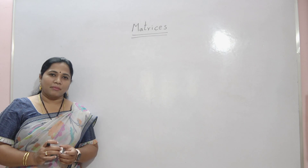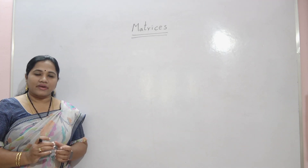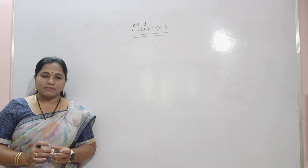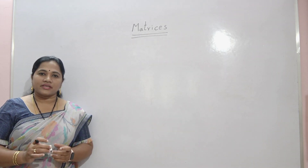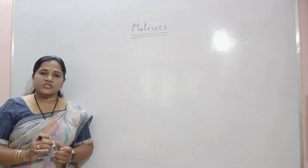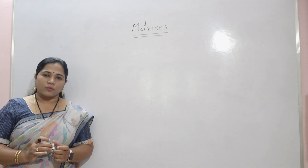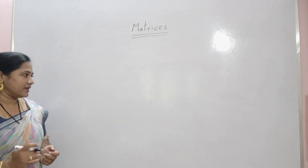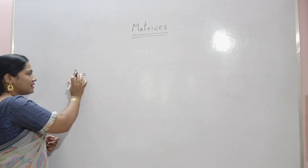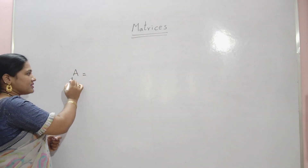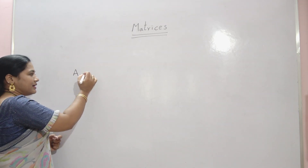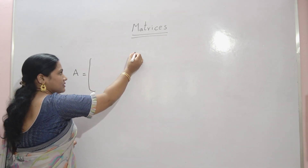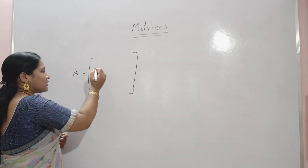First, let me tell you what is a matrix. A matrix is a rectangular arrangement of elements. The elements may be numbers, symbols or expressions arranged in rows and columns, which is used to express a mathematical object or the properties of such an object. Generally, the matrix is represented with a capital letter A.